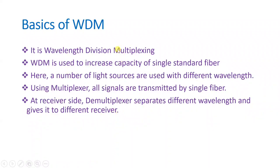In a WDM network, we multiplex multiple channels with respect to wavelength — that is why it is referred to as Wavelength Division Multiplexing. Transmitters send signals with different wavelengths, we combine them using a multiplexer, and at the receiver side we demultiplex and deliver to each assigned receiver.